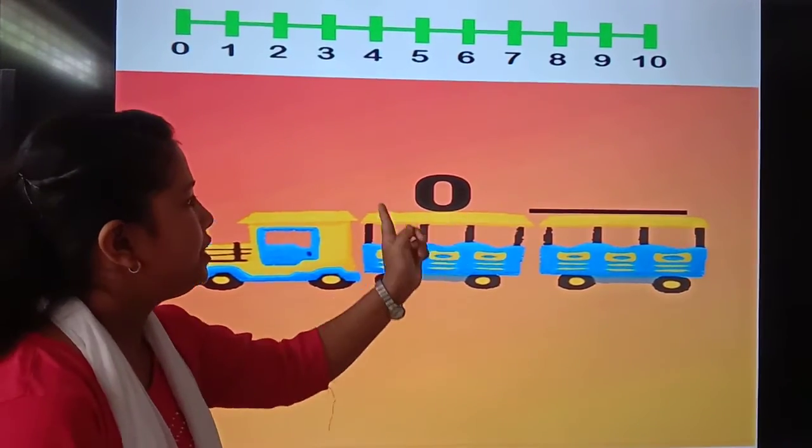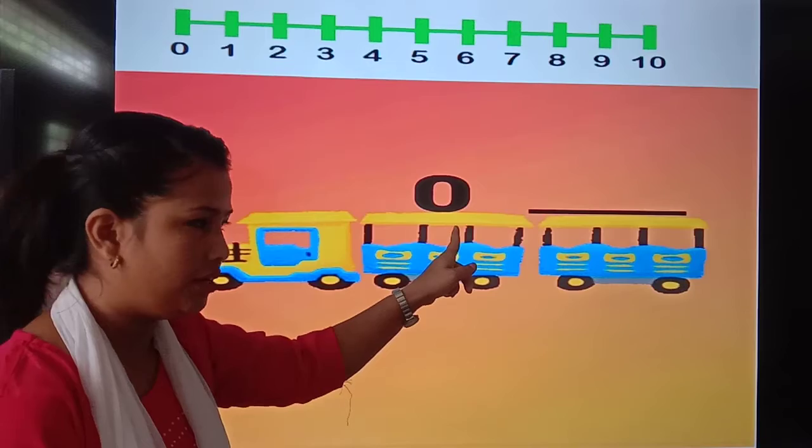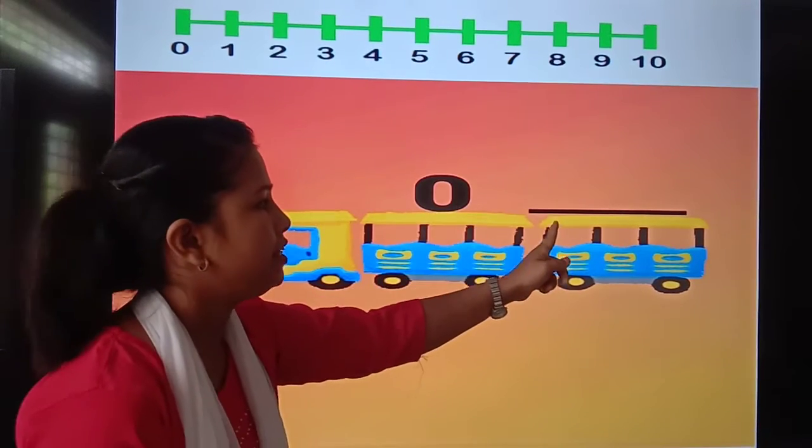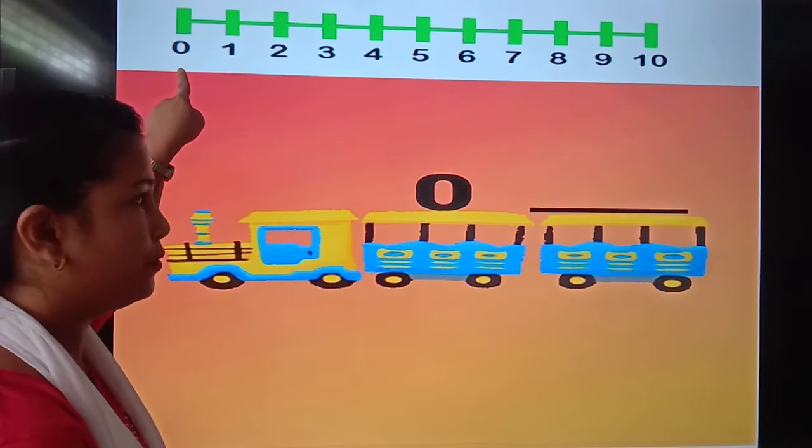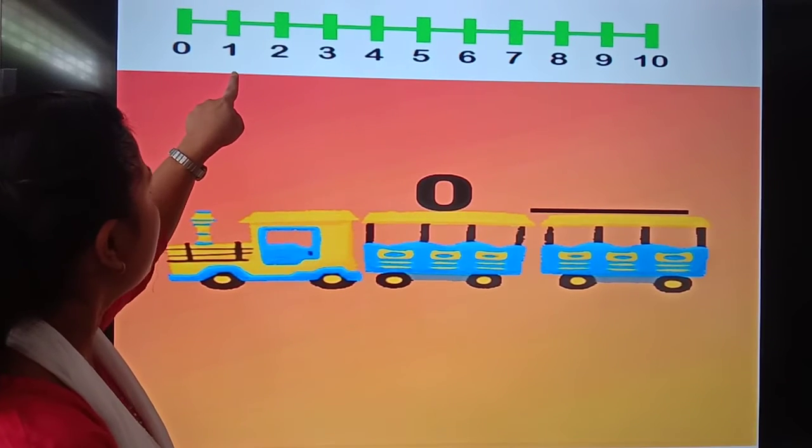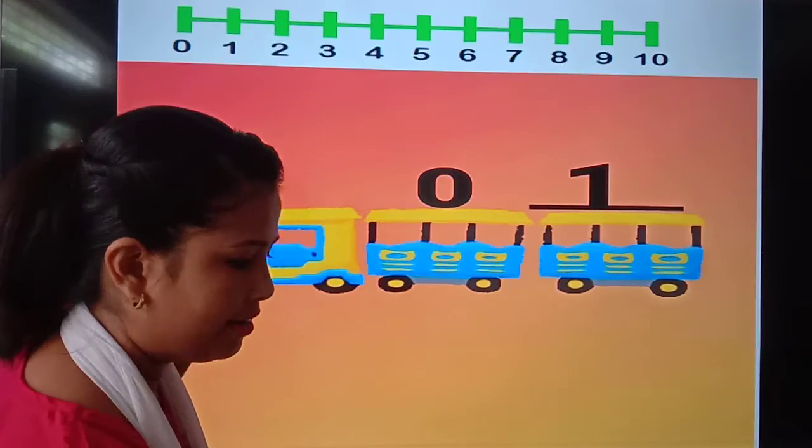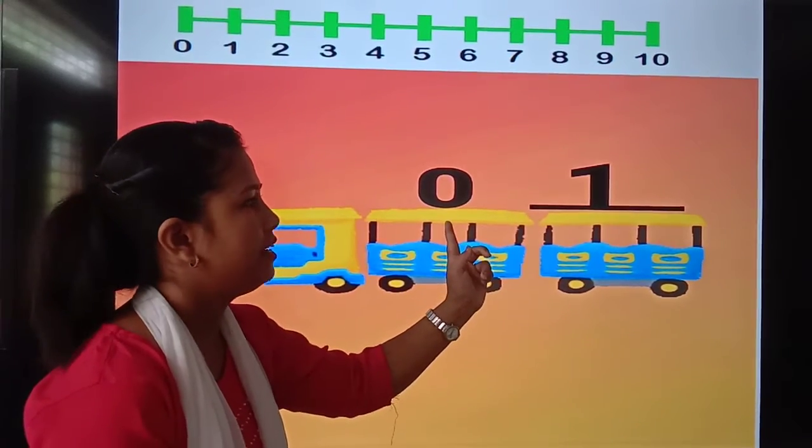Next, 0. Which number is this? 0. What comes after 0? See the number line. Where is 0? Yes, here is 0. What comes after 0? Yes, 1. 1 comes after 0.